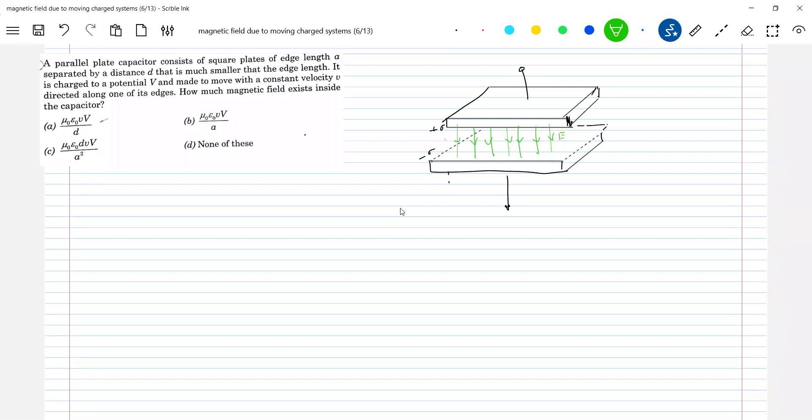How the plates are moved and made to move with a constant velocity directed along one of its edges. So we can pick any direction. I'll write it U, that small V or capital V. Now it's asking what is the magnetic field between the gap, in that gap.